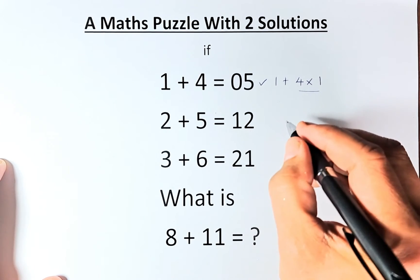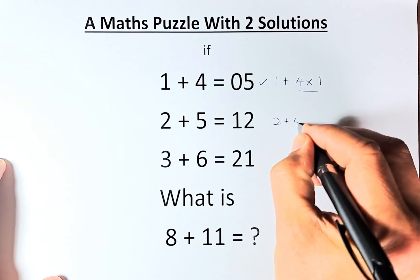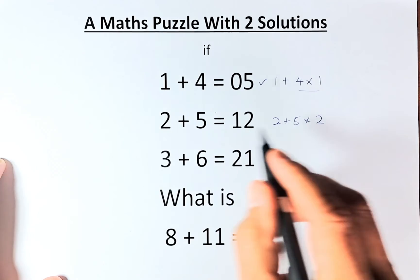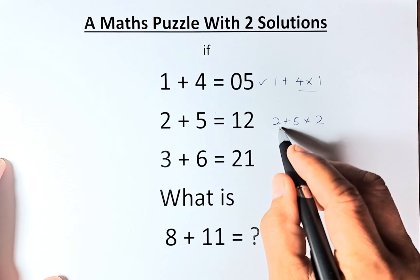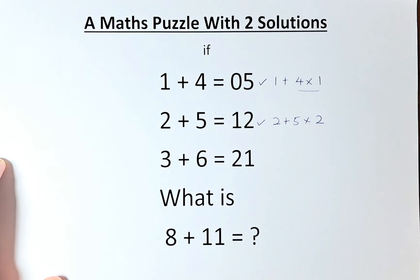Similarly, for the second row, we're going to take 2 plus 5 times 2. The second number, the first number, you multiply it. So 5 times 2 is 10, 10 plus 2, that will give us 12.